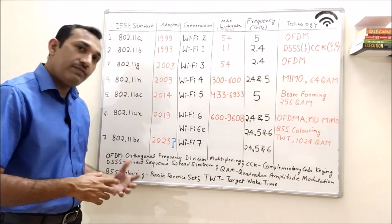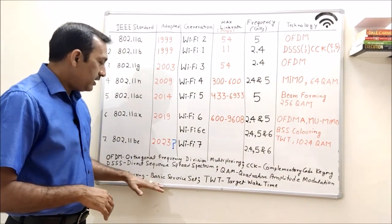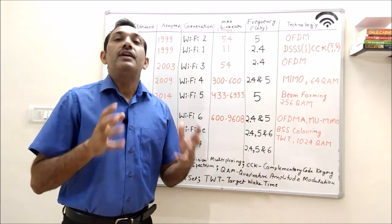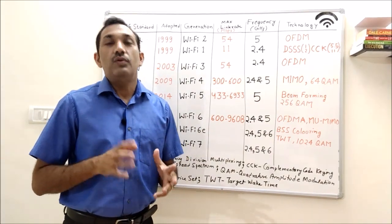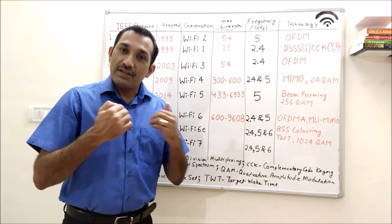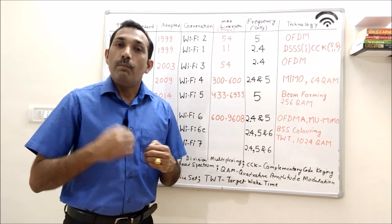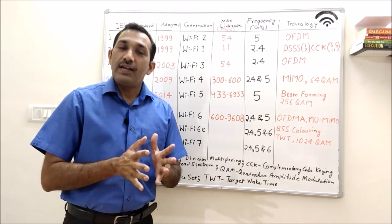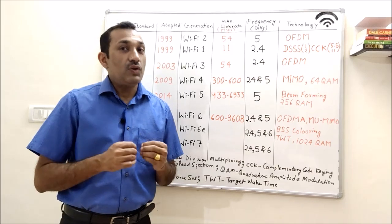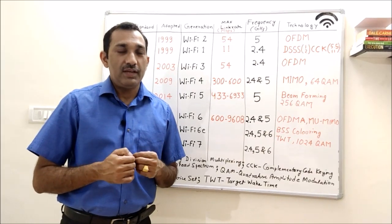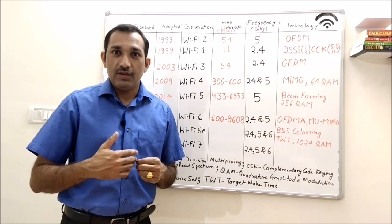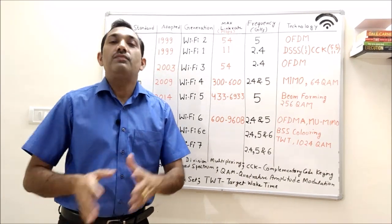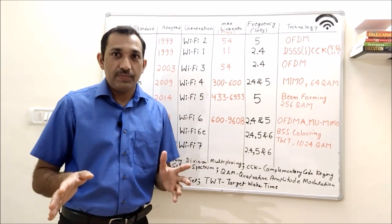BSS coloring is another very important technology, which is basic services set, where the AP assigns different colors to different users or devices. The receiver or device matches this color every time it receives a signal. If the color is different, then it knows this signal is not coming from the targeted AP or paired AP. It is something different and it just ignores it. So, we are reducing noise in the system.